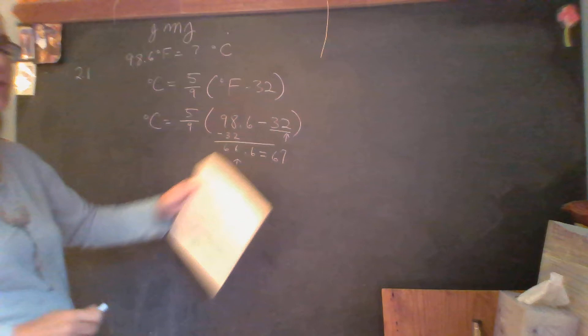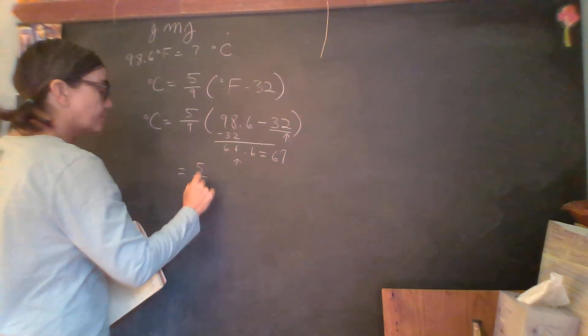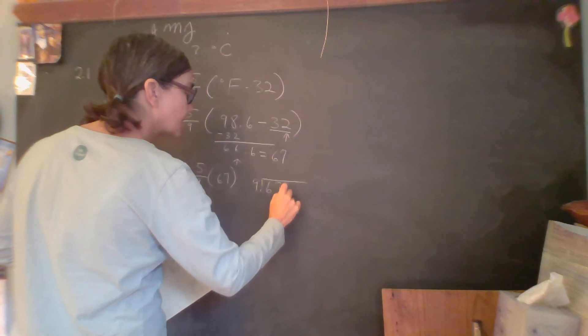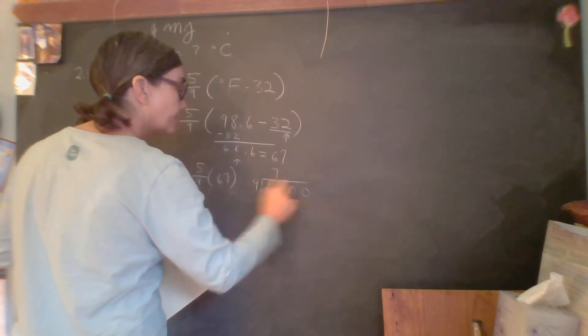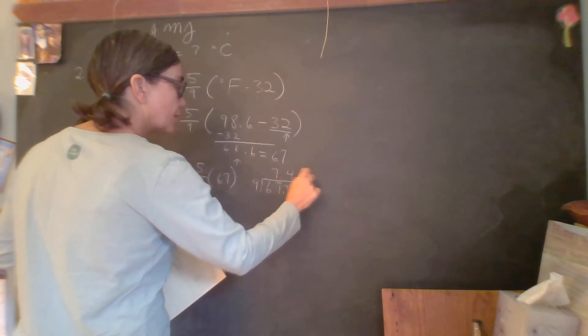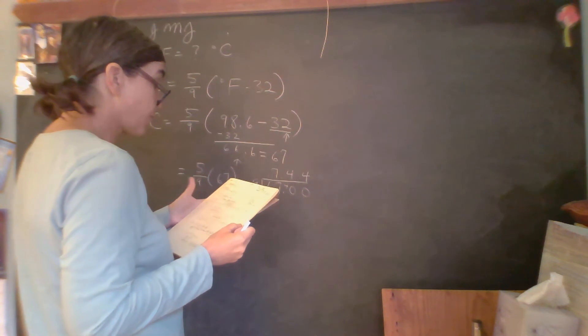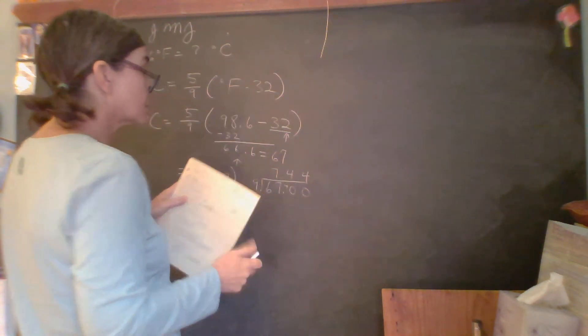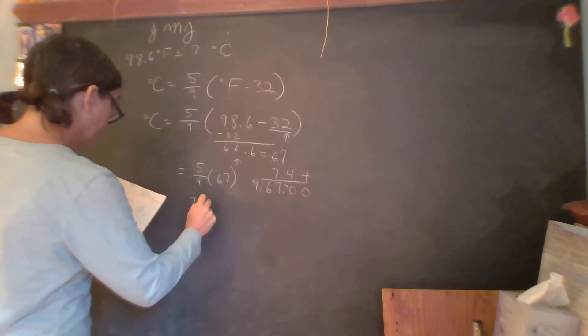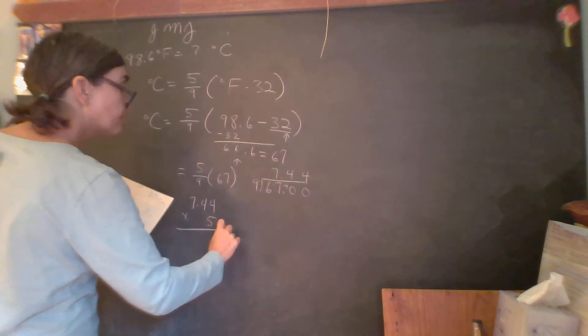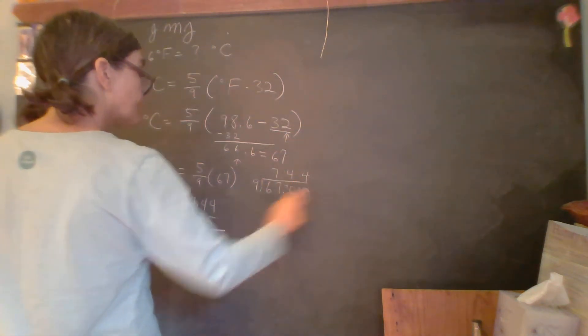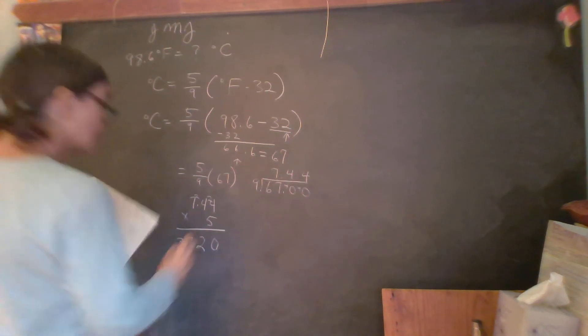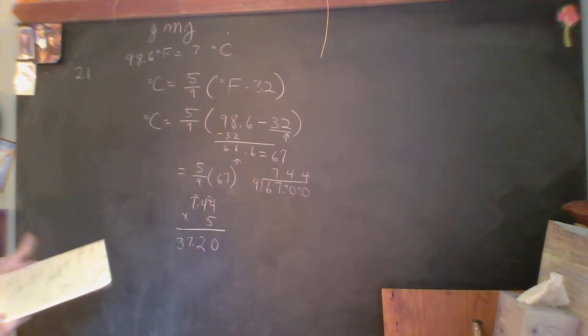So now I'm going to calculate 5 ninths of 67. So 9 goes into 67 about 7 times, and then multiply that by 5, which gives an answer of 37.20 degrees Celsius.